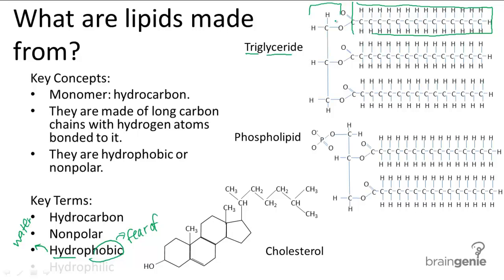Phospholipids have two fatty acids plus a phosphate group, all attached to the glycerol. Just remember, phospho refers to the phosphate group, and lipid refers to the two fatty acids.